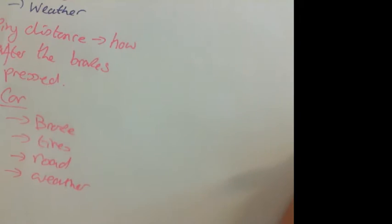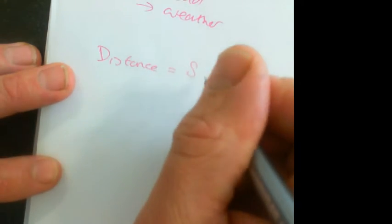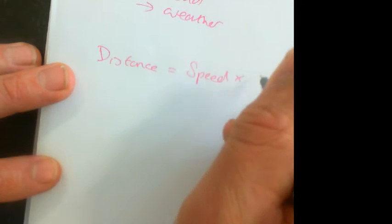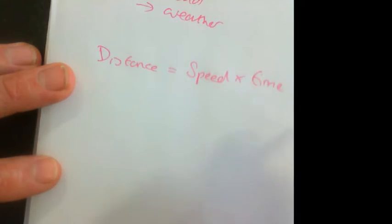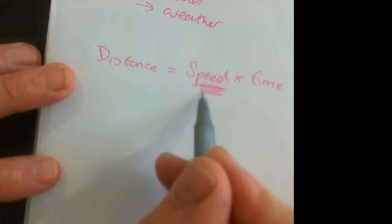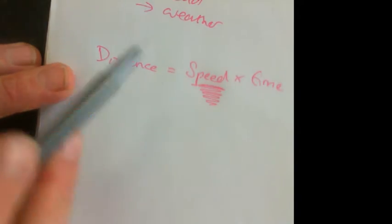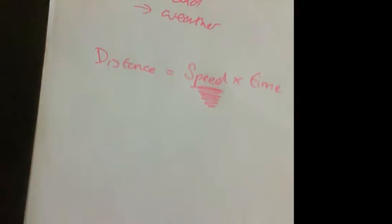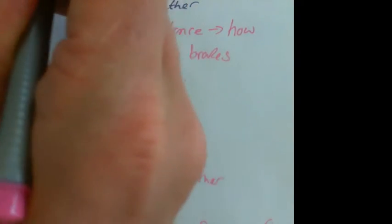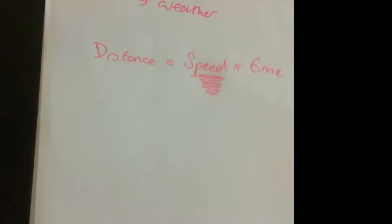The other bit that's kind of obvious is if we know that distance equals speed times time, then we know that the distance is also going to be influenced by the speed. That doesn't matter whether it's braking distance or thinking distance. They will both be increased by how fast you're going.